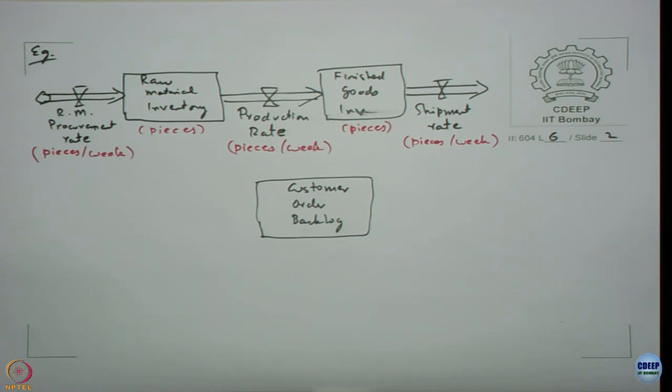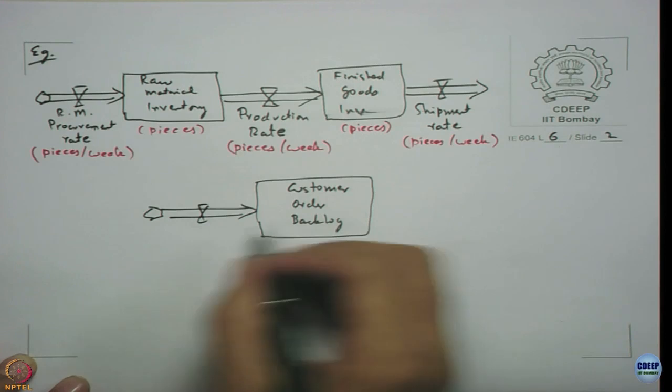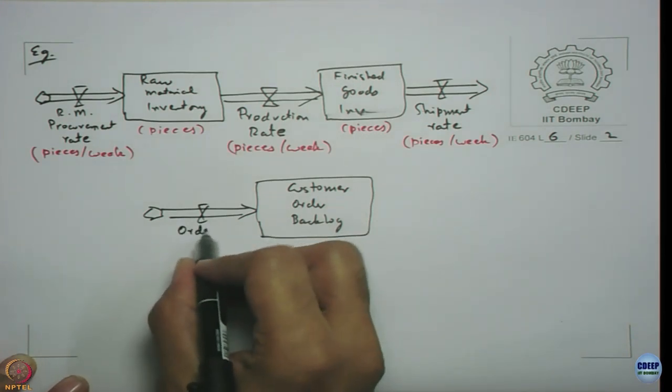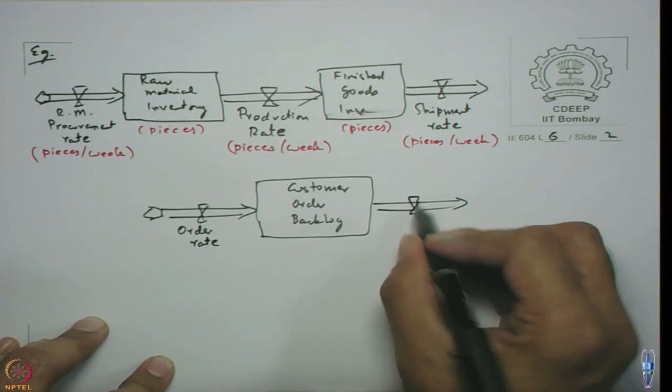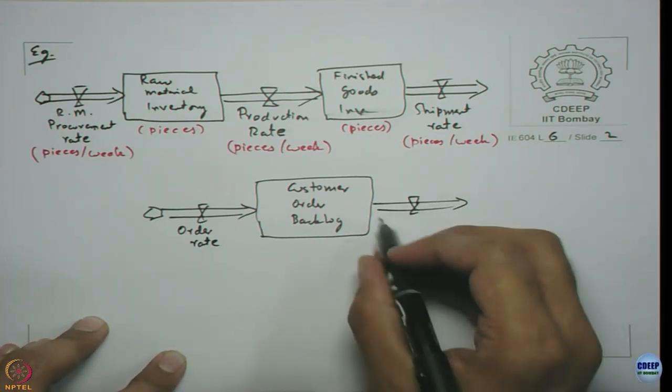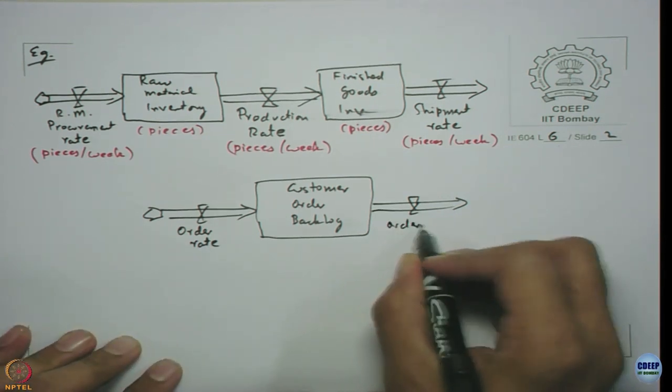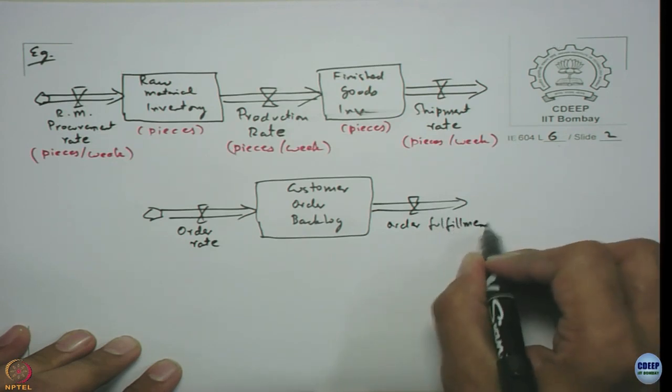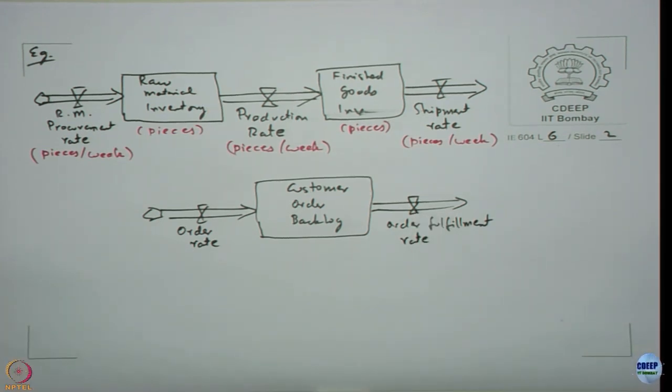This is the physical flow of the material that we have captured. The second part of description dealt with the information flow. What we have is customer order, there is backlog. We have customer order rate. As more orders come in, the backlog is going to increase. We can just call it as order rate. As we start fulfilling orders, that orders rate is going to go down, order fulfillment rate, the rate at which orders are fulfilled.